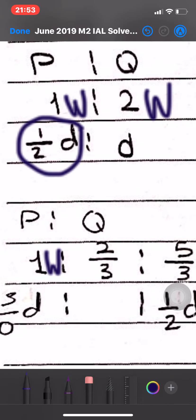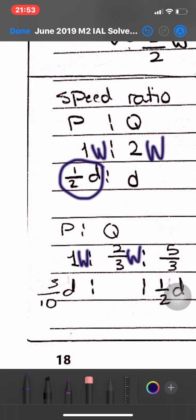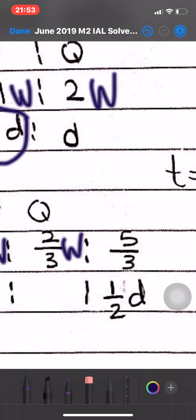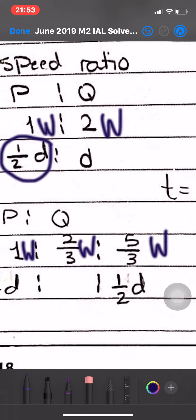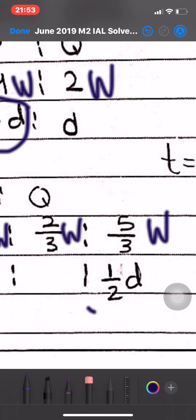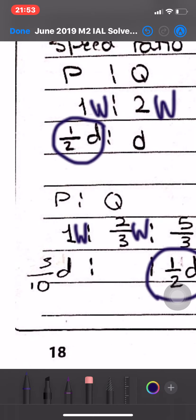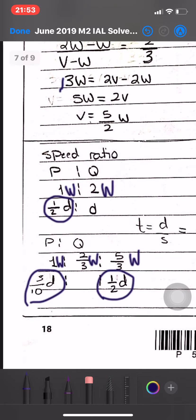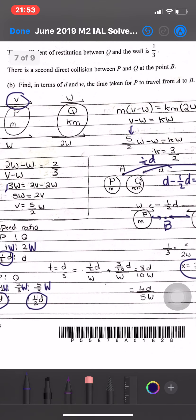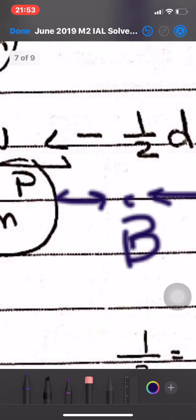We will use the distance ratio with the speed of P at W and Q at 2 over 3 W. The total combined speed is 5 over 3 W. The total distance for P is 1 over 2 D, so we get P travels 3 over 10 D.